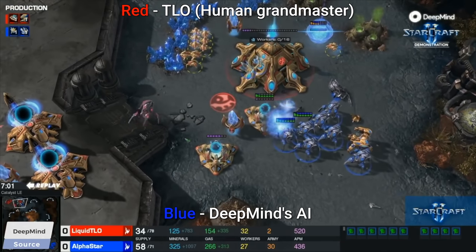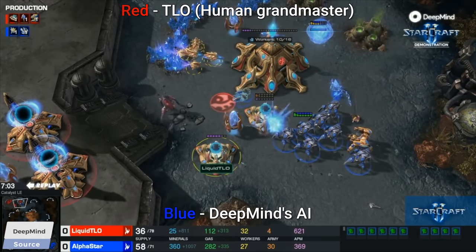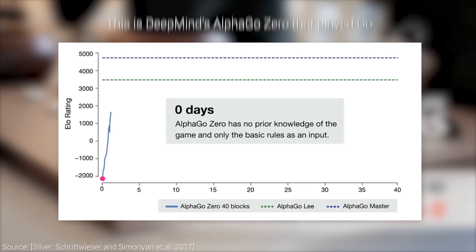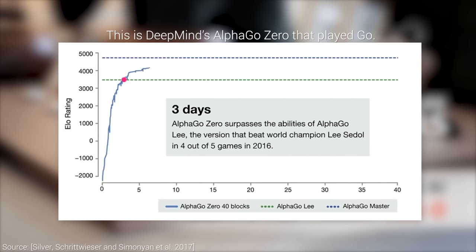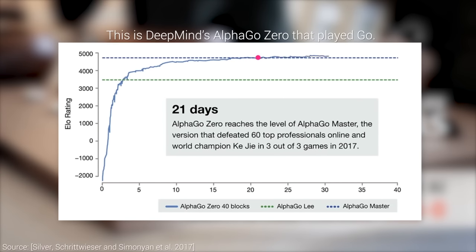To say that these worked really well would be an understatement. DeepMind's MuZero is one of the best in the world in chess, Go, and StarCraft 2 as well.